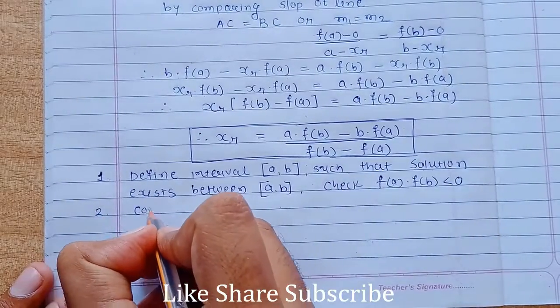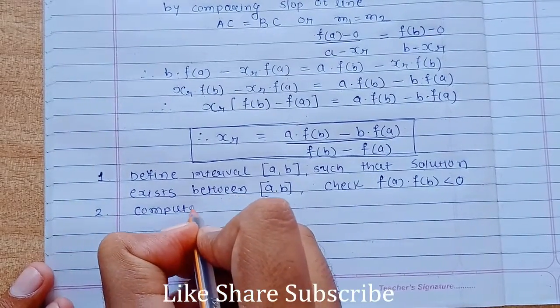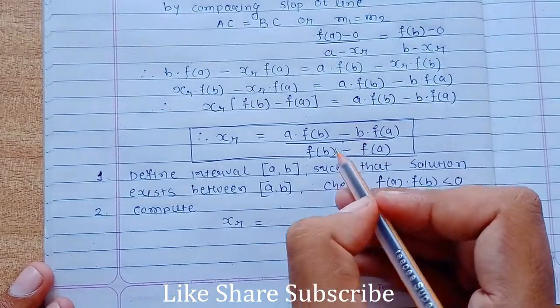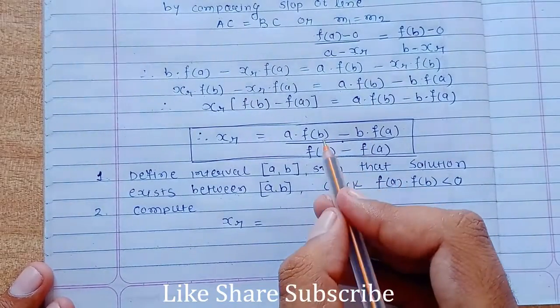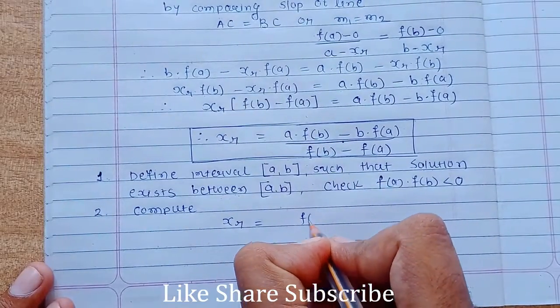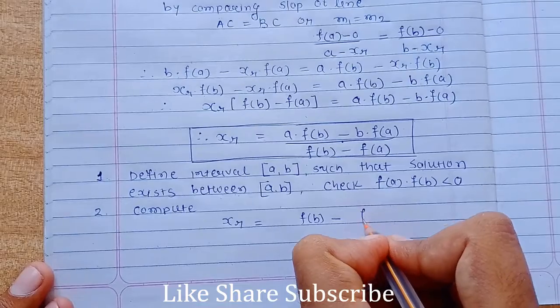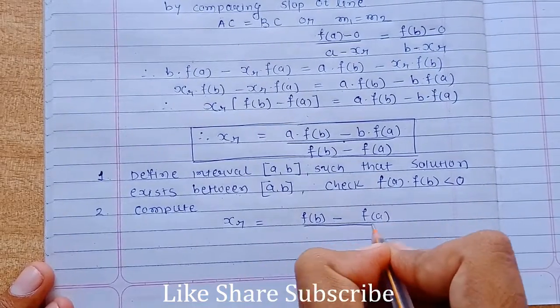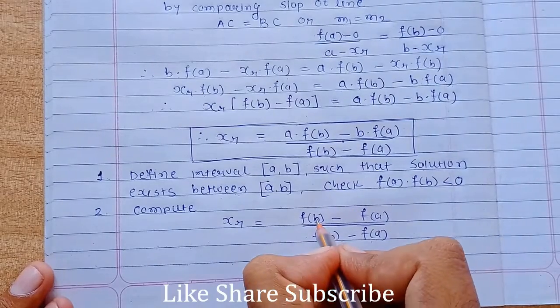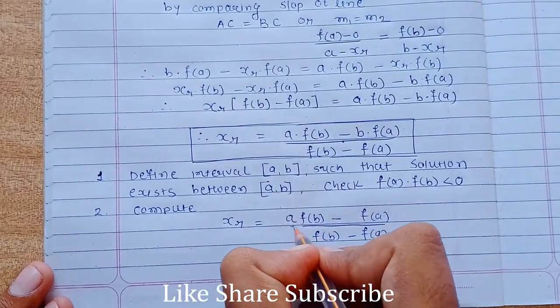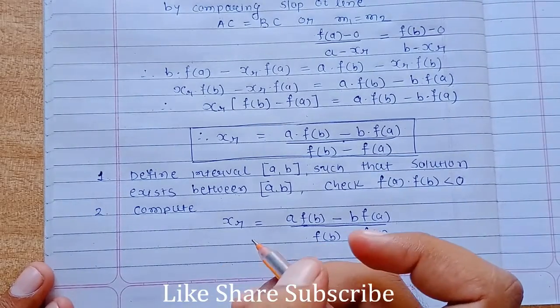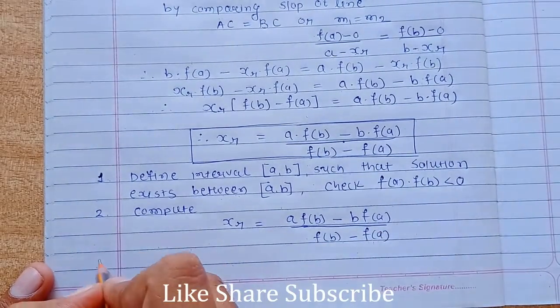xr using this formula. We will remember this formula by just writing it this way: a into f of b minus b into f of a divided by f of b minus f of a. Since here it is a, b, write it over here a. Here it is a, write it over b. And the third, how to change the interval.